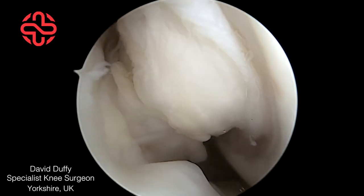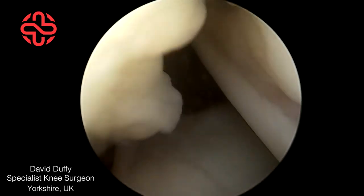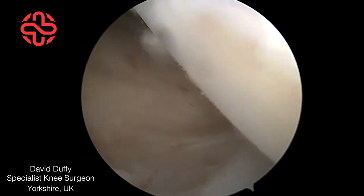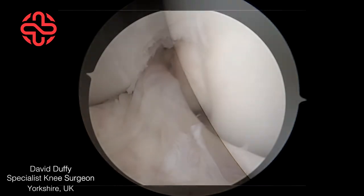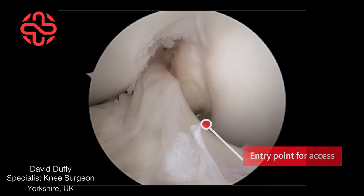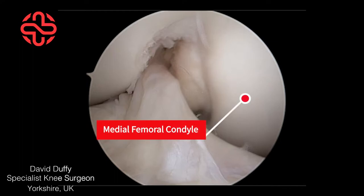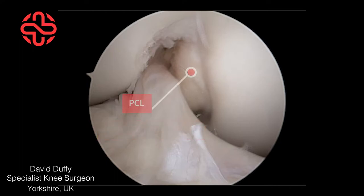Inspection of the post-remedial compartment of the knee joint should be done during any routine arthroscopy. The landmarks bordering the entry for the scope to the posterior aspects of the knee are the medial femoral condyle, the PCL and the ACL and tibial spines.